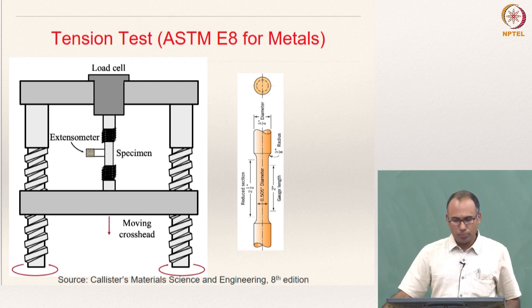This is a typical tension specimen — cylindrical in shape — but you also have flat tension specimens called dog bone specimens, where the central region is called the gauge section and has a reduced cross-section compared to the area where the specimen is gripped using the crosshead.